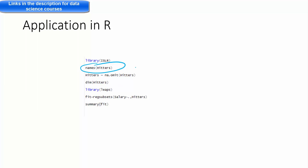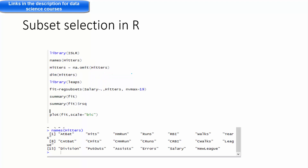We have this dataset and we will demonstrate these algorithms and see how it works. So we have this Hitter data. There are several variables — it's about the salary of baseball players in the US, and it depends on many things: different aspects of the players and different predictors which predict the salary, which is the target variable for the given baseball player.